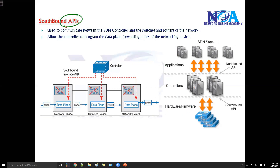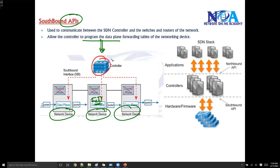With the help of Southbound APIs, we are going to program the data plane of the networking devices on how they will be forwarding traffic. In SDN concepts, the actual networking devices handle the data plane job, while the control plane decisions are made on the controller. This controller is going to decide the actual forwarding of the traffic via the networking devices, and that communication process is done with the help of Southbound APIs.